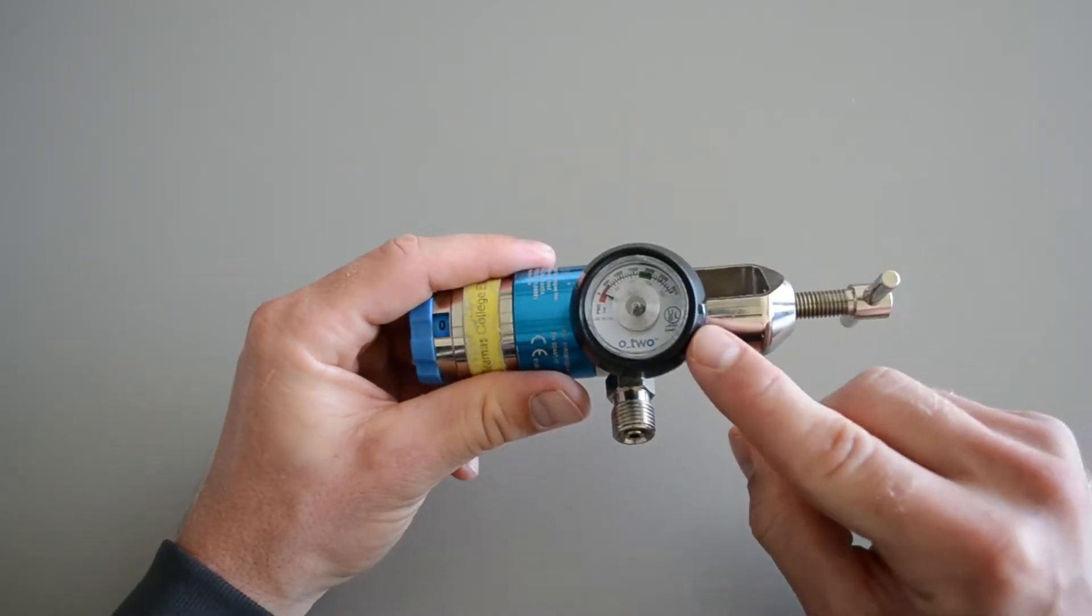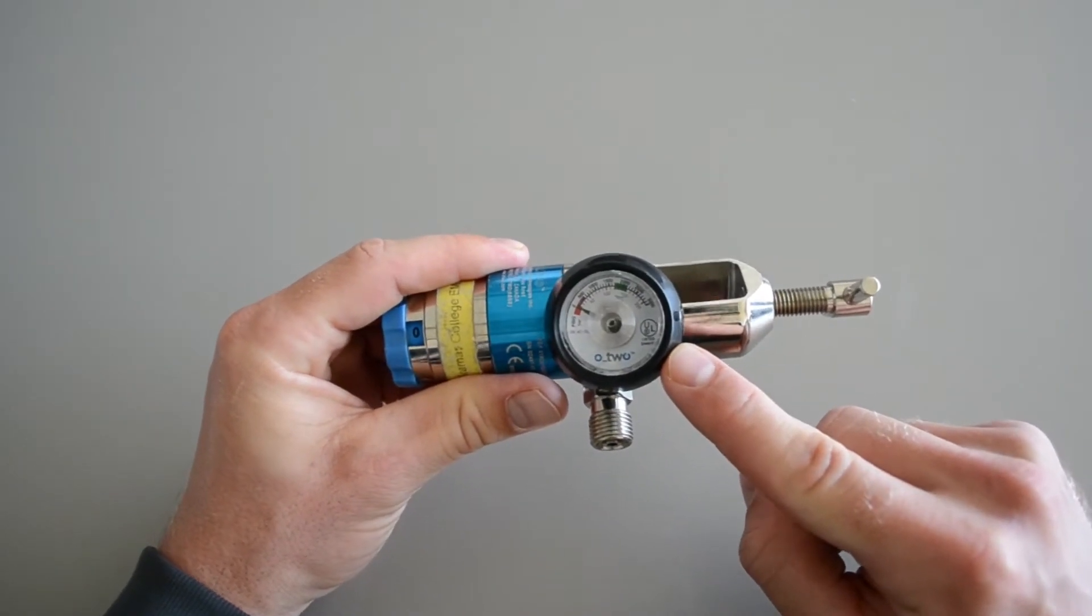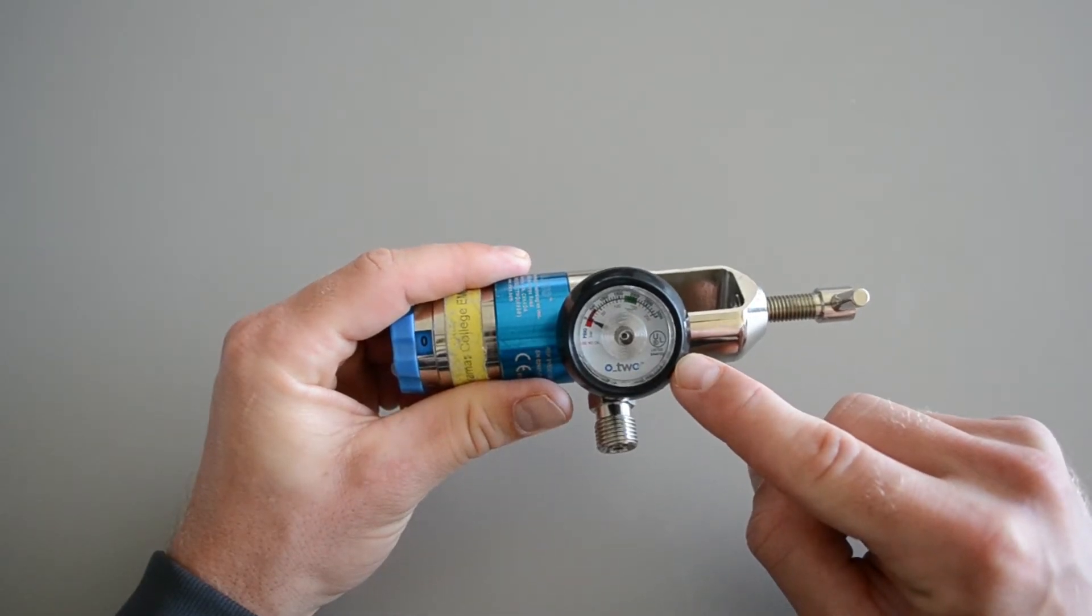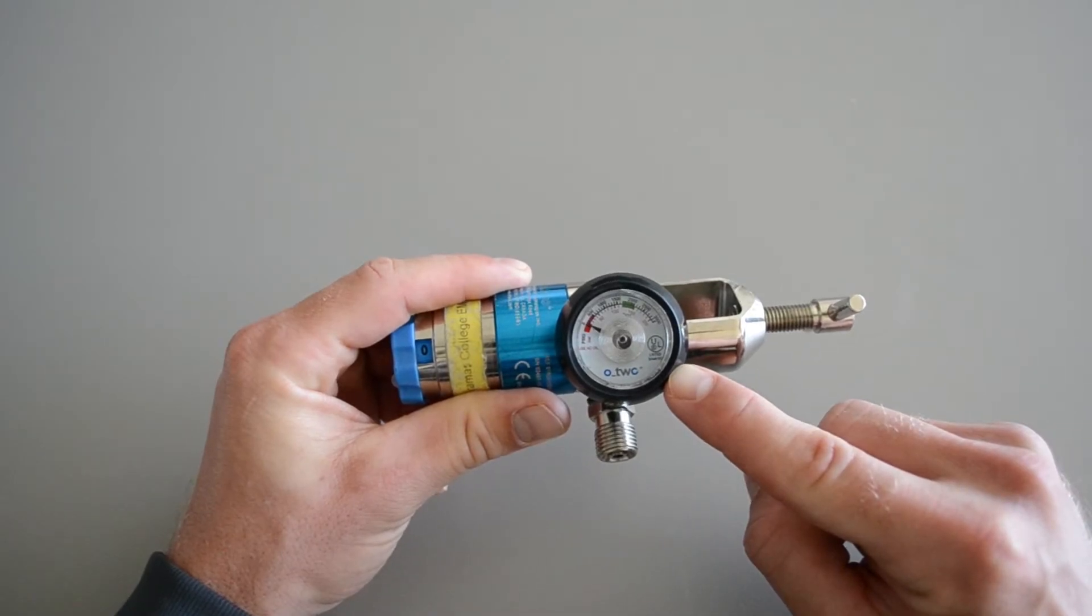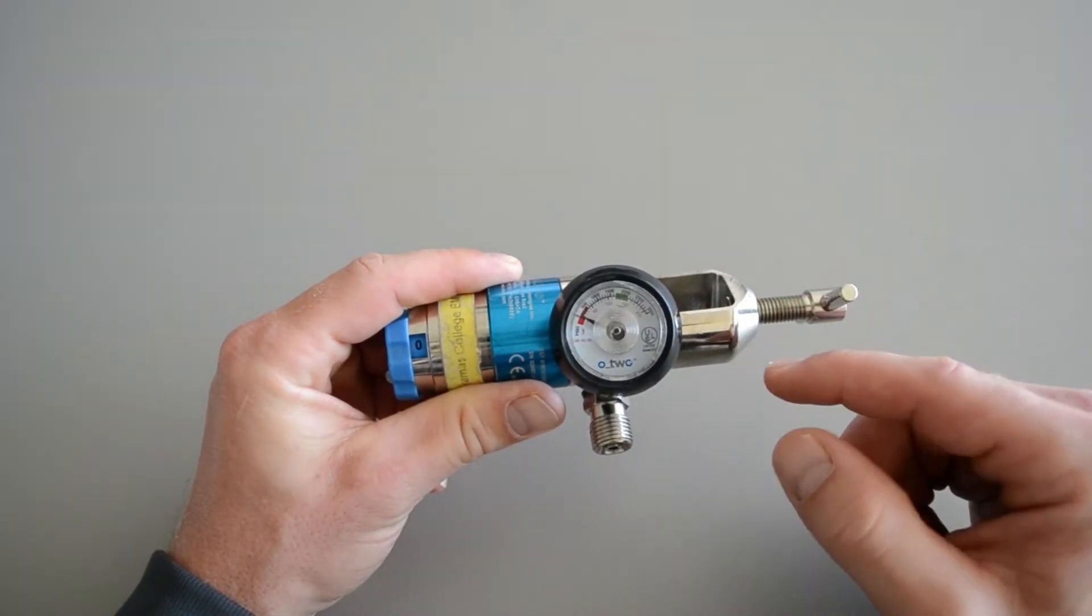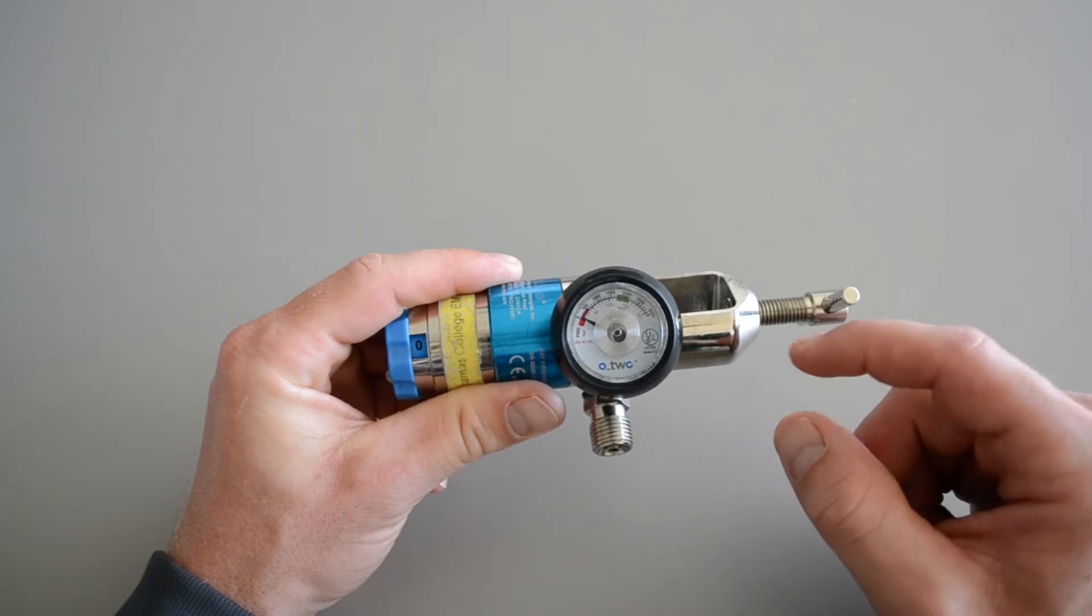Biggest components are this dial, this will indicate the PSI, pounds per square inch, that's present in the O2 cylinder. A full tank will read at 2,000 PSI, and in the field we typically change these out when it drops below 1,000.